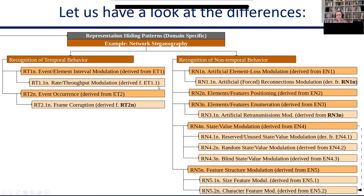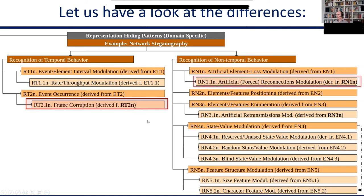There are also some specific patterns derived in the domain-specific context. For instance, the RT2N pattern, frame corruption, comes from the original frame corruption pattern already present — it's a special version of the event occurrence pattern where there is some event, but it's a corrupted frame, and it's described multiple times in literature, so it's a pattern for the network context, which is why we add an N at the end. Bold pattern derivations are derived not from embedding patterns, but from representation patterns. We have two more: artificial forced reconnections modulation — where artificial loss is a network connection and we force a reconnect — and artificial retransmissions, also specific to the network context.